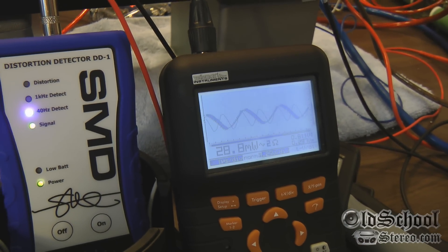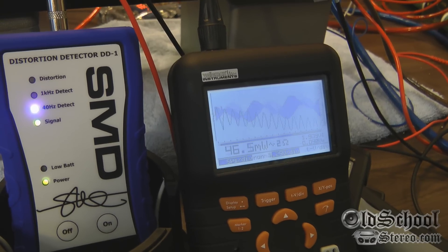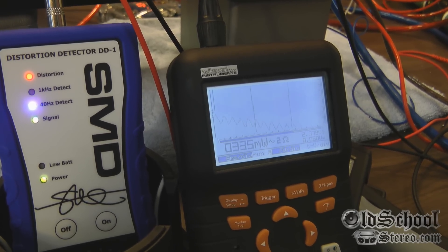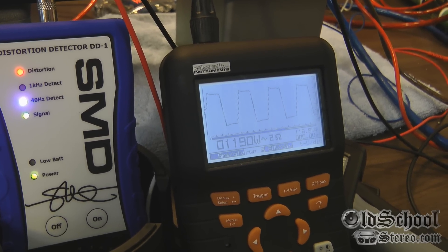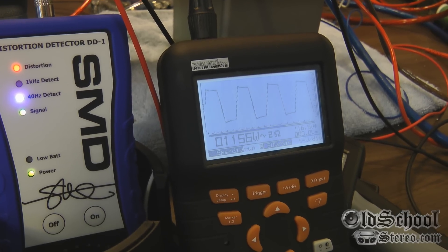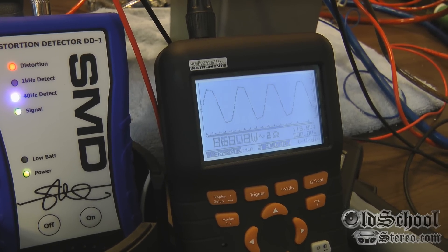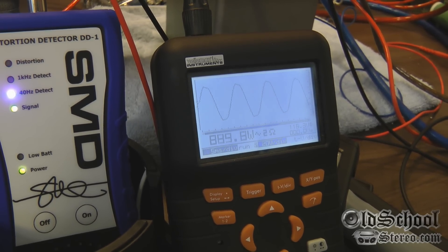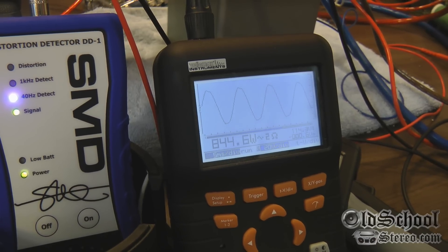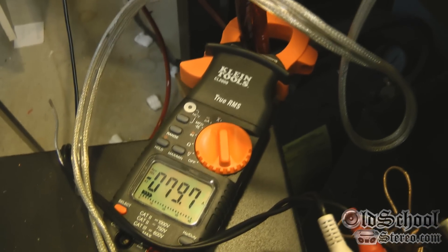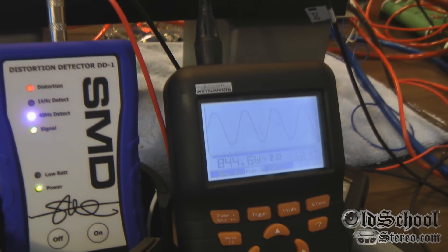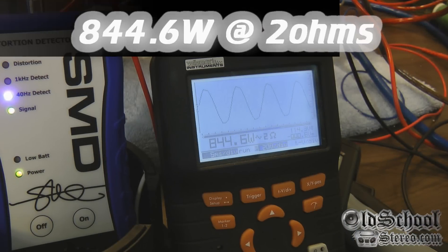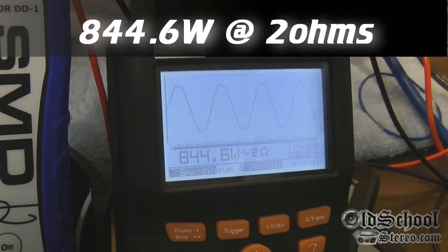40 Hertz signal going in. Let's see what kind of power we get. Oh that's hard clipping there, 1190 watts. Let's back it down. Looks like according to the DD1, 844.6 watts and we're pulling 79, almost 80 amps from the battery or the power source. So 844.6 watts, wow pretty impressive.